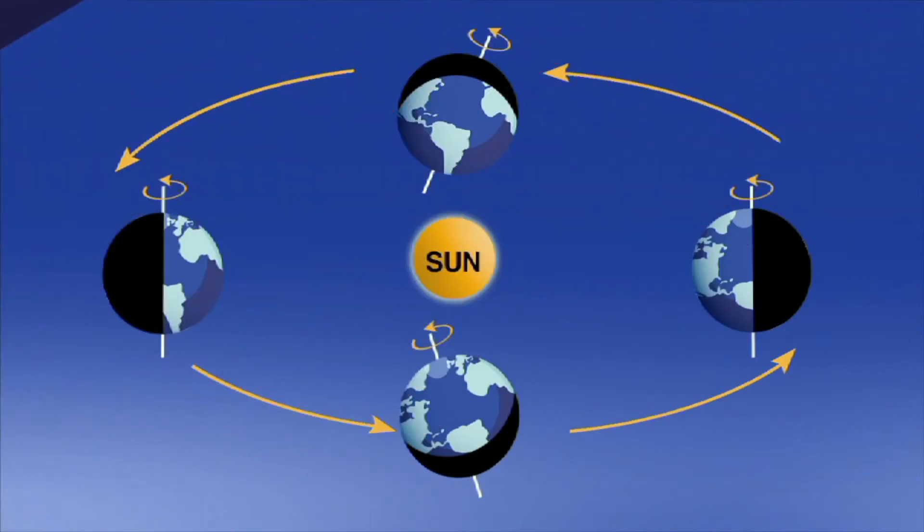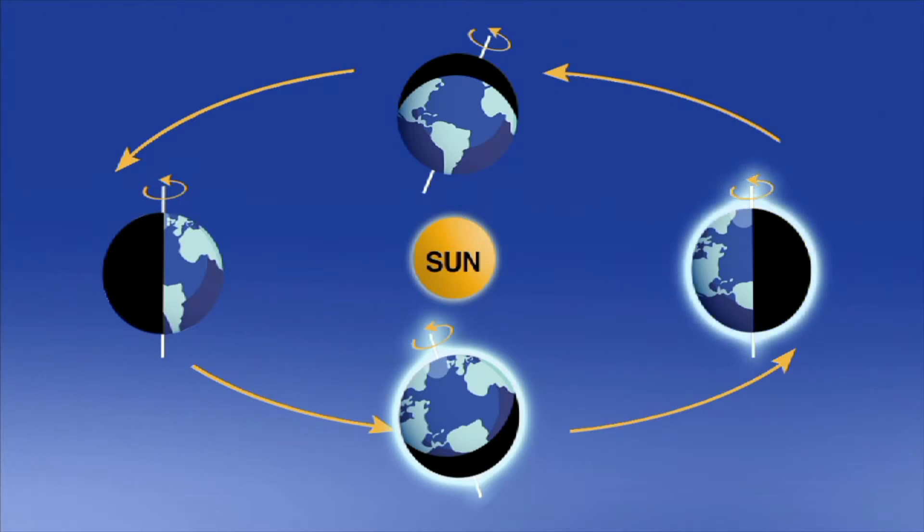The spring equinox, or vernal equinox, is the first day of spring and occurs when the Earth's axis begins to tilt towards the sun again on its journey to the summer solstice.